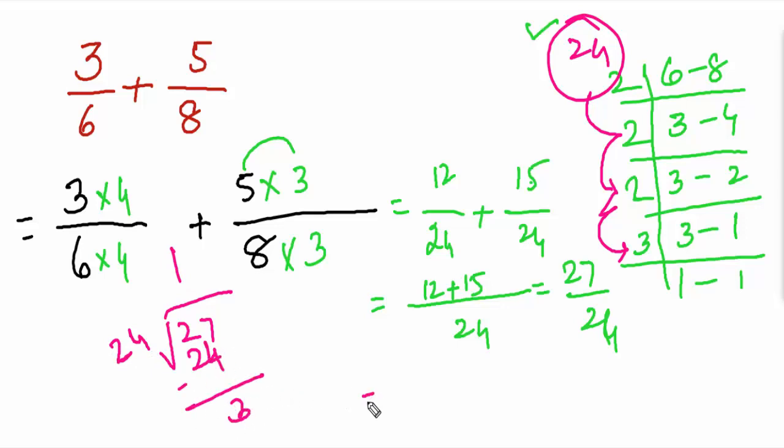remainder 3. Now you can write it: one whole 3 by 24. This is the mixed fraction. This is the fraction.